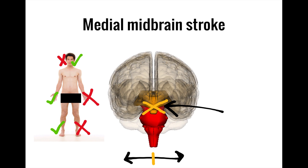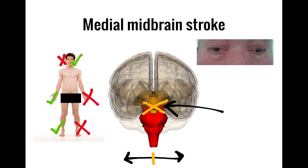The rule of crossed findings still exists — it just involves fewer nerves. Your primary clue to a midbrain stroke will be an oculomotor nerve palsy manifesting in ptosis, mydriasis, and a down-and-out position of the pupil, in addition to some form of motor findings. Depending on the exact areas involved, the motor findings can present in a variety of different ways.